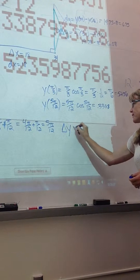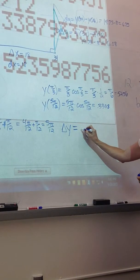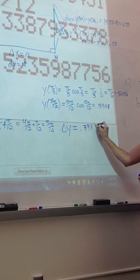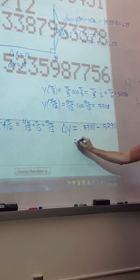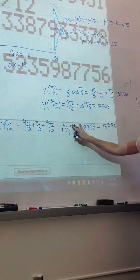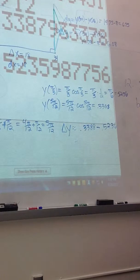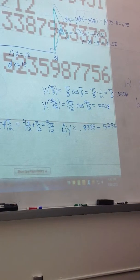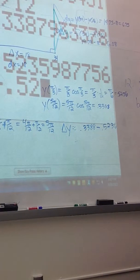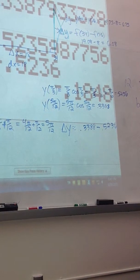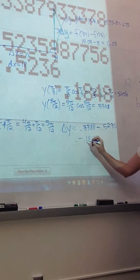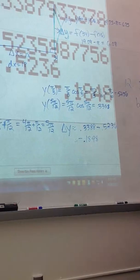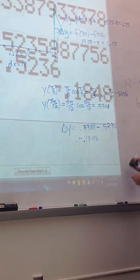All right, so delta y is 0.3388 minus the 0.5236, which is approximately because I rounded those values. So, 0.3388 minus 0.5236, so negative 0.1848. That's delta y. That's the actual difference in the y values.